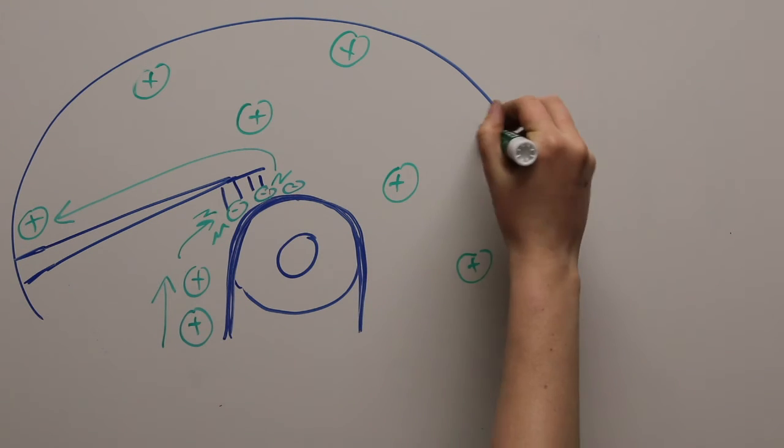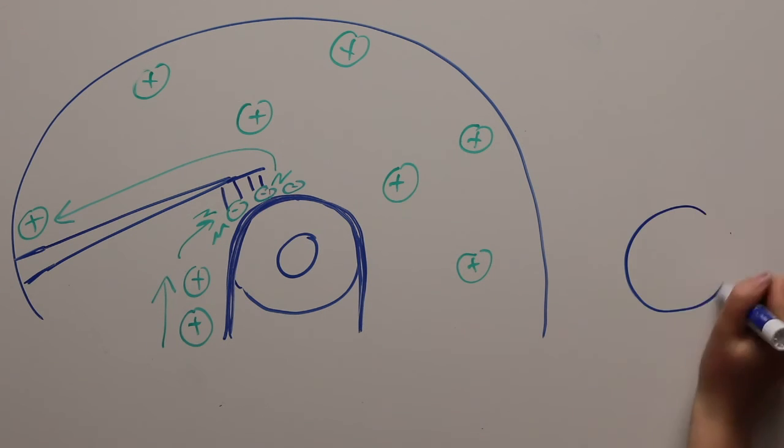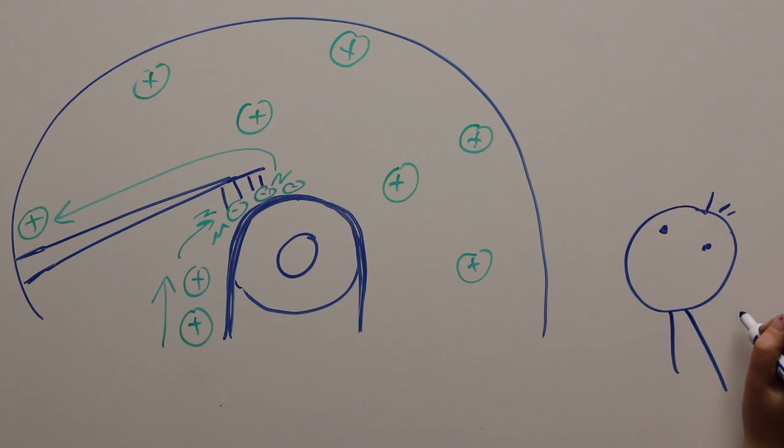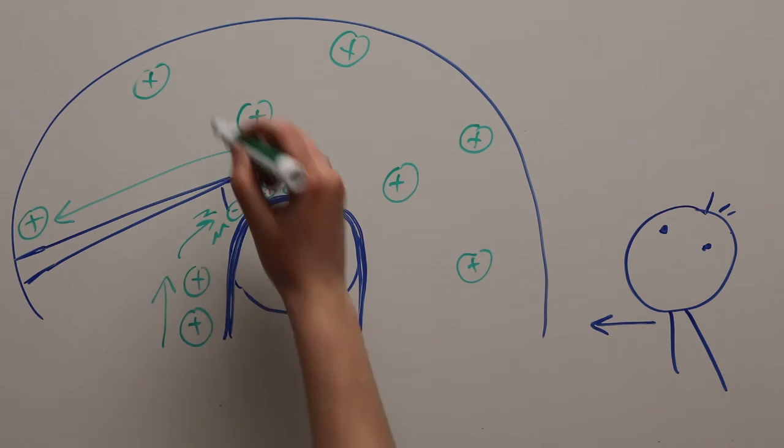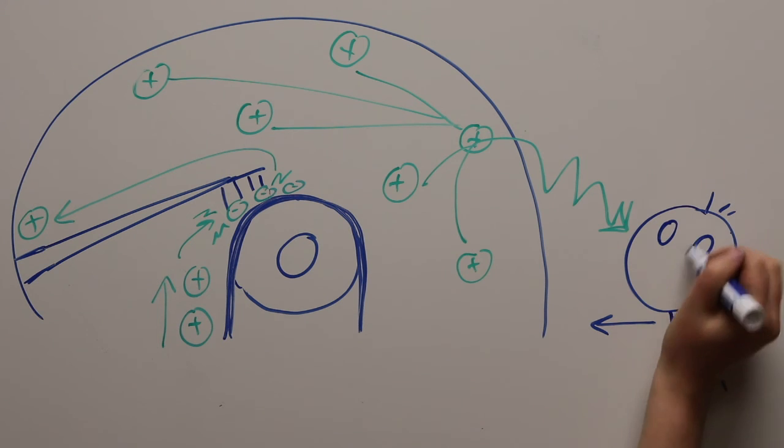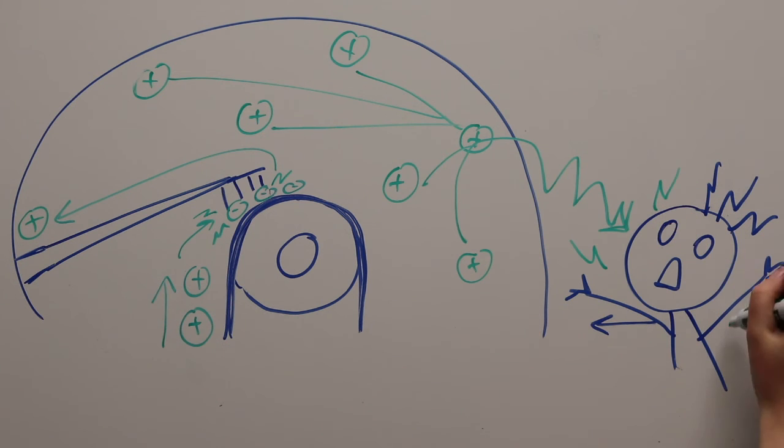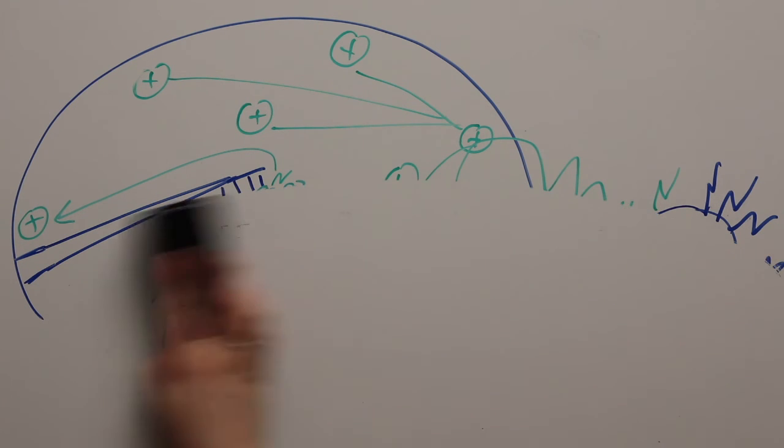This process is continuous until a grounded object comes close enough to discharge all of the positively charged ions, or particles. This could be a rod, part of the machine itself, or a human. During the discharge, atoms move incredibly fast, thus achieving the primary purpose of particle acceleration.